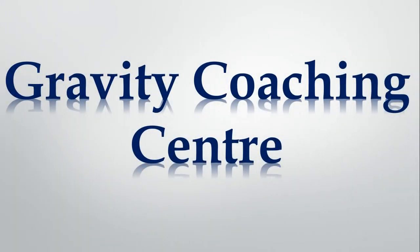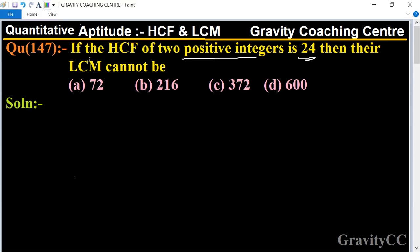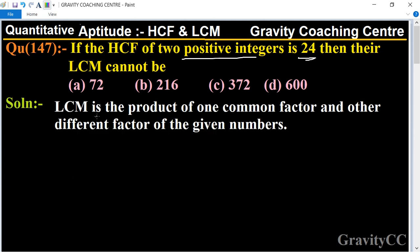Welcome to our channel Gravity Coaching Center. Quantitative Aptitude chapter HCF and LCM, question number 147: If the HCF of two positive integers is 24, then their LCM cannot be (a) 72, (b) 216, (c) 372, (d) 600. Solution: LCM is the product of one common factor and other different factors of the given numbers.